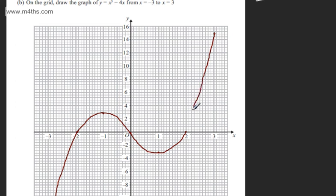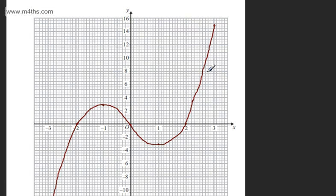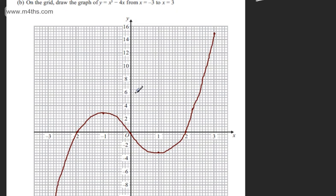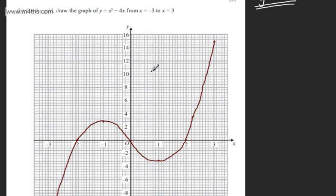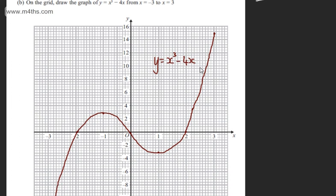Remember this is a sketch. You're not doing any crazy plotting, it's just a sketch. Don't do any more values. This looks perfectly fine. And if you want you can just go ahead and write y equals x cubed minus 4x. So that's part B done for two marks.